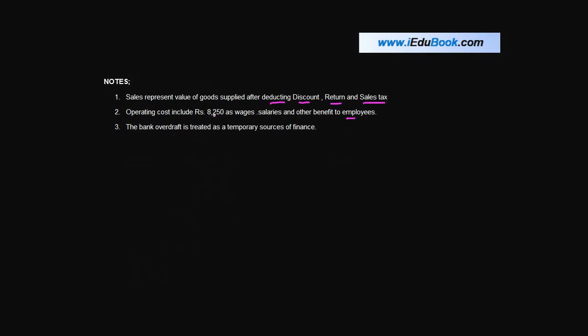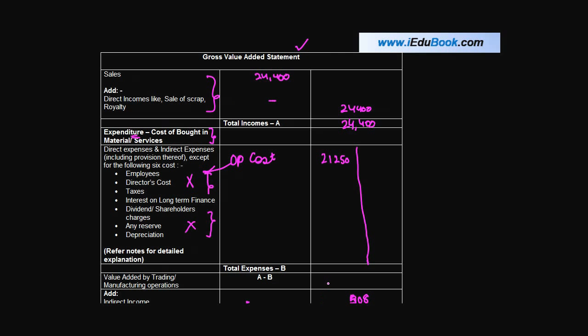Operating Cost includes 8250 as wages, salaries and benefits to employees. I have told you that the Direct Expenses and Indirect Expenses except for the following six costs are to be included. You are told that in this 21250, there is an employee cost of 8250 but that is not supposed to be included in the Expenditure side. So we will reduce it from this number. This gives you 13000.